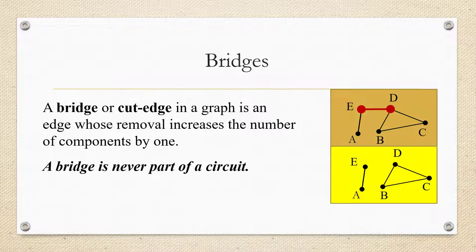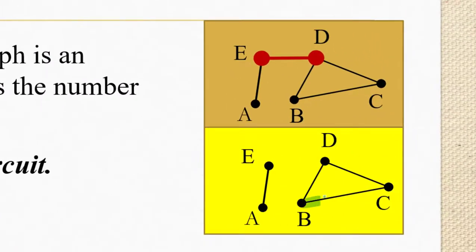Now a bridge can never be part of a circuit. Remember a circuit is a closed trail. It loops back around. So for example, the vertices B, C, and D are part of a circuit. And there's no way that any of the three edges in that circuit could be a bridge because if we remove one of them, the other edges connect the vertices still.